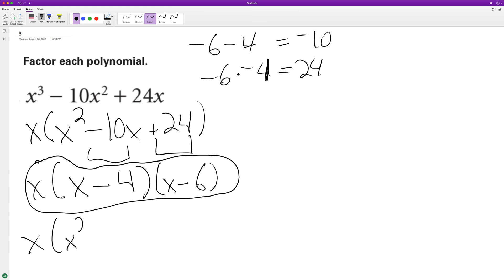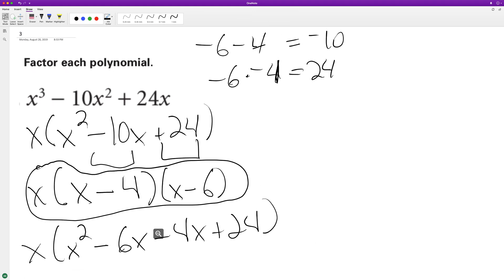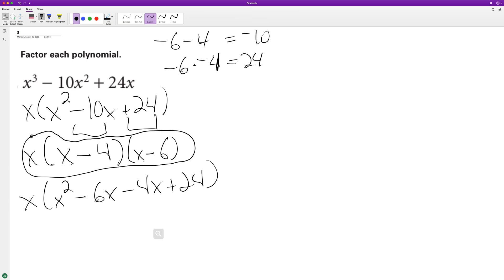So X, we have X squared minus 6X minus 4X plus 24. And then we multiply, oops, we multiply in our X, X cubed distributed minus and then 10X squared plus 24X. Yep, checks out.